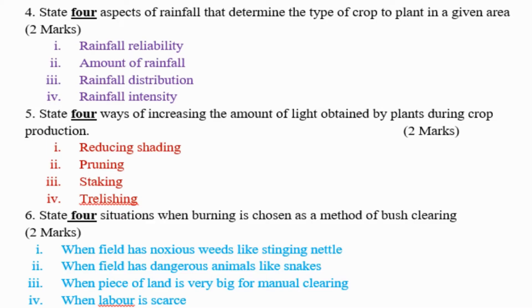State 4 ways of increasing the amount of light obtained by plants during crop production. Number 1: reducing shading — that is, you remove some leaves or branches from the tree or crop. Number 2: pruning. Number 3: staking.